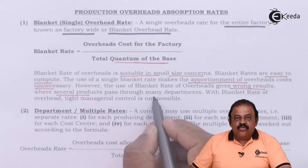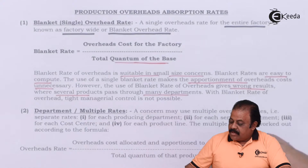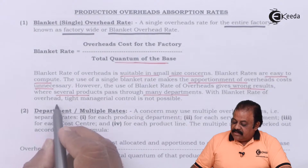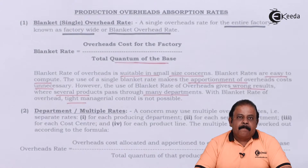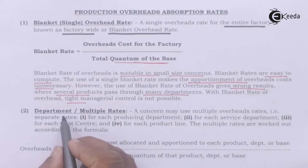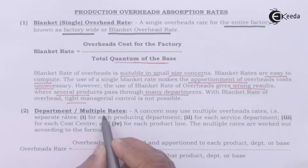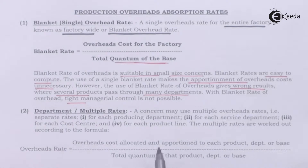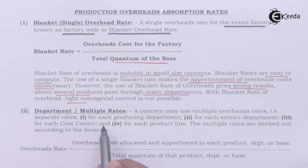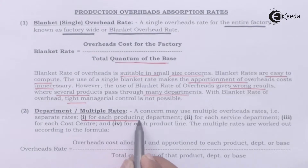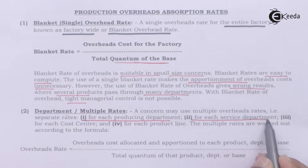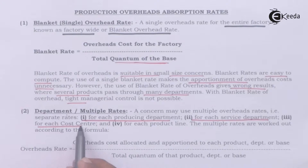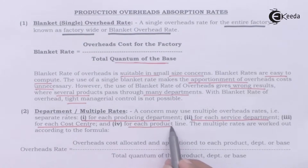However, the use of blanket rate gives wrong results where several products pass through many departments. With blanket rate, tight managerial control is not possible. The other type of rate is departmental or multiple rates — a concern may use multiple overhead rates, that is, separate rates for each producing department.